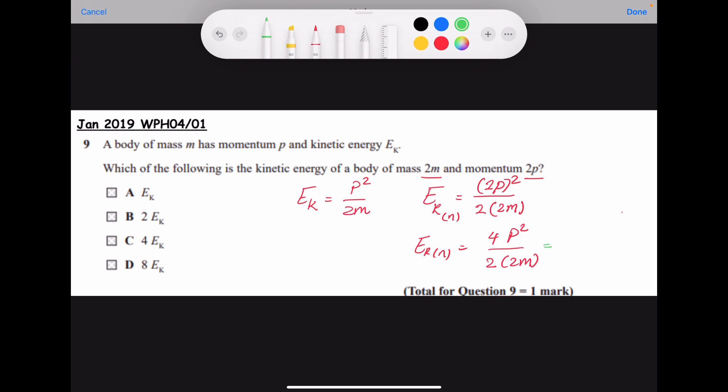If you look at the formula, p squared over 2m is similar to the p squared over 2m here for the value of the old kinetic energy.